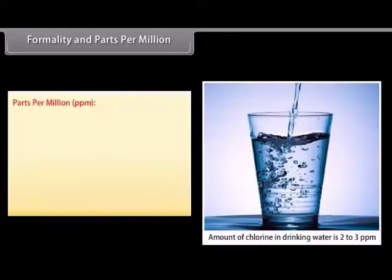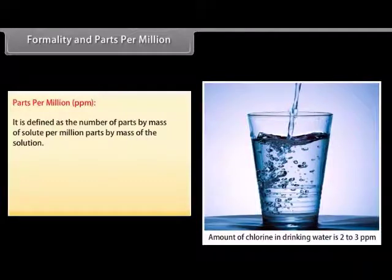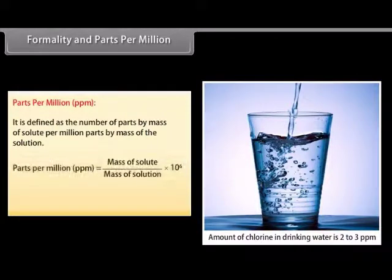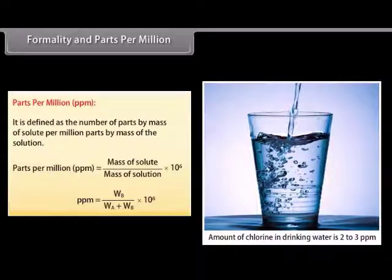Parts per million (PPM) is defined as the number of parts by mass of solute per million parts by mass of the solution. It is abbreviated as PPM. Mathematically, PPM is equal to W_B divided by (W_A + W_B) multiplied by 10 raised to the power 6.